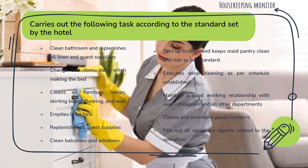Carries out the following tasks according to the standards set by the hotel: clean bathroom and replenish all linen and guest supplies; change bed linen daily when making the bed; clean all furniture, lamps, skirting boards, flooring and walls; empty litter bins; replenish all guest supplies; clean balconies and windows; set up trolleys and keep the maid pantry clean and tidy as per standard. Execute deep cleaning as per schedule established. Maintain a good working relationship with own colleagues and all other departments. Clean balconies and maintain guest corridors, including ashtray and red carpet in front of guest lift.